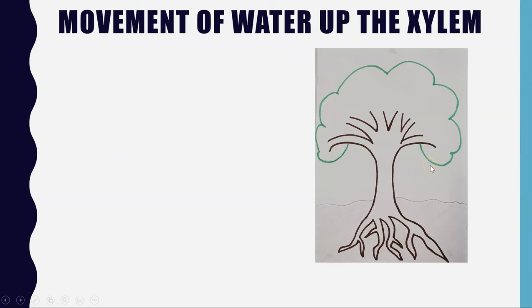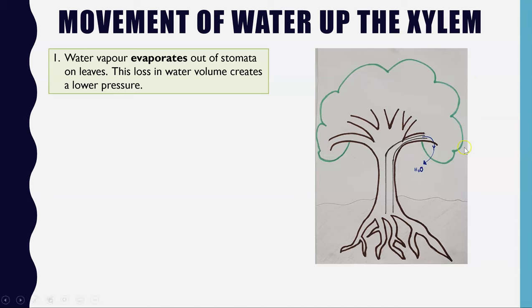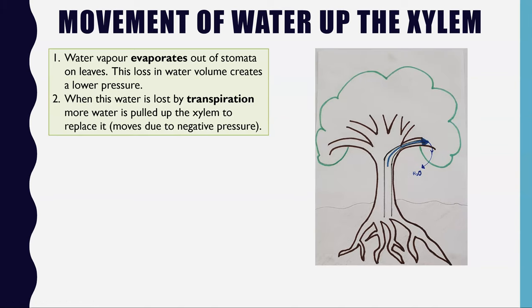How can water move up a tree several metres against gravity? Step one: water evaporates out of the stomata — that is transpiration. This creates a loss in water volume, which produces a lower pressure in the space where the water evaporated from.